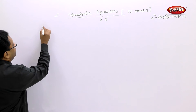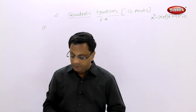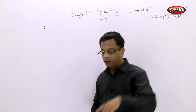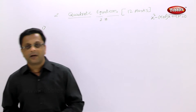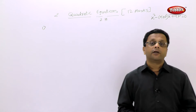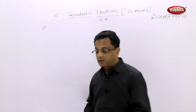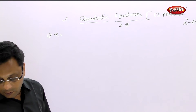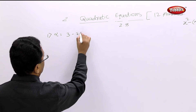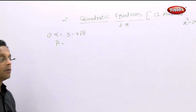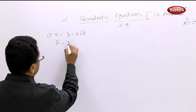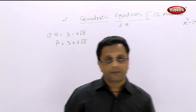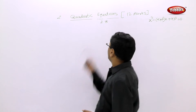Question number two has six roots — that means six different examples. In question two, they are given one root in the form of a root sign — irrational numbers — and you have to find the quadratic equation. When one root is given in this form, let us see the first example: if alpha is equal to 3 minus 2 root 5, then immediately you should know that beta is 3 plus 2 root 5 — they are conjugates of each other.